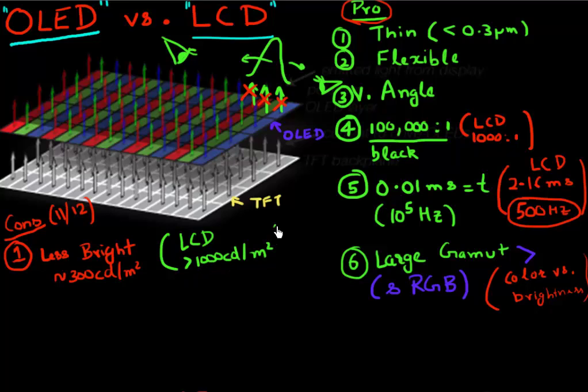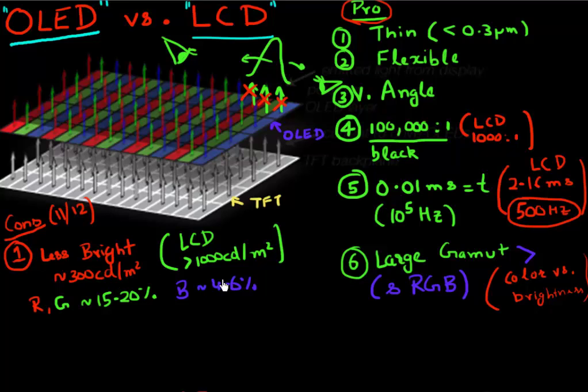This comes from the fact that so far, these organic light emitting diodes have efficiencies of around 15 to 20 percent for your red and green, while blue has been a real weak point with efficiency between four to six percent. The overall efficiencies of these organic light emitting diodes limit the brightness of these displays.